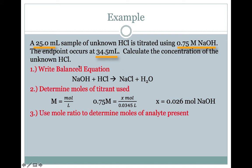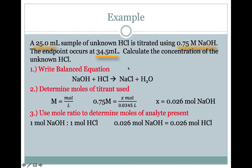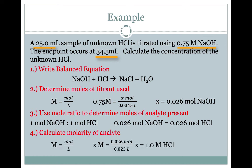Using the mole ratio from the balanced equation, which is 1 to 1, that means we had 0.026 moles of HCl in our initial analyte solution. Finally, we use the molarity equation again to calculate the molarity of the original unknown or analyte. The molarity is our unknown x, we know the moles from the previous step, and we know the volume from the problem. It turns out that this solution was approximately 1.0 molar at the start.